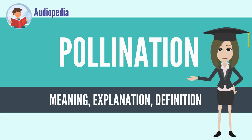In angiosperms, after the pollen grain has landed on the stigma, it develops a pollen tube which grows down the style until it reaches an ovary.